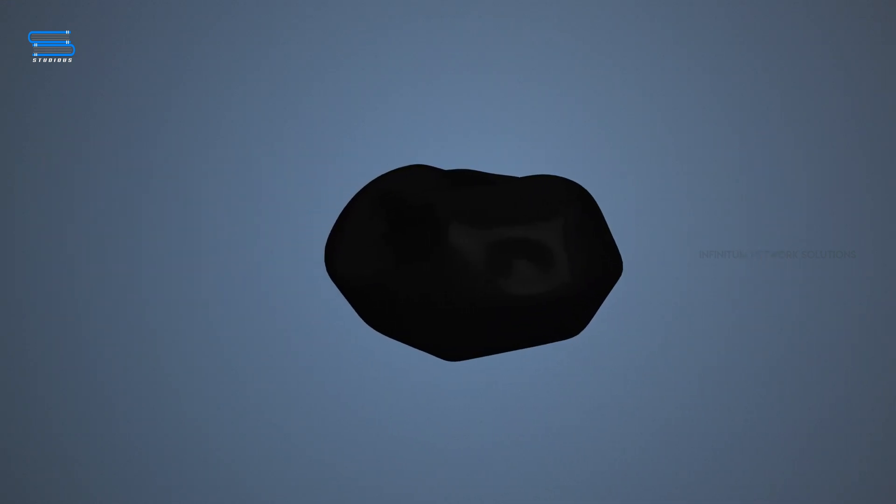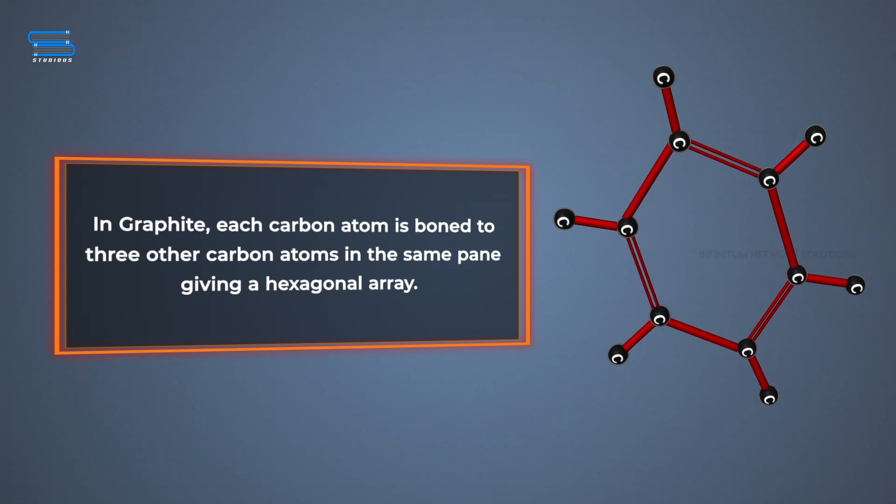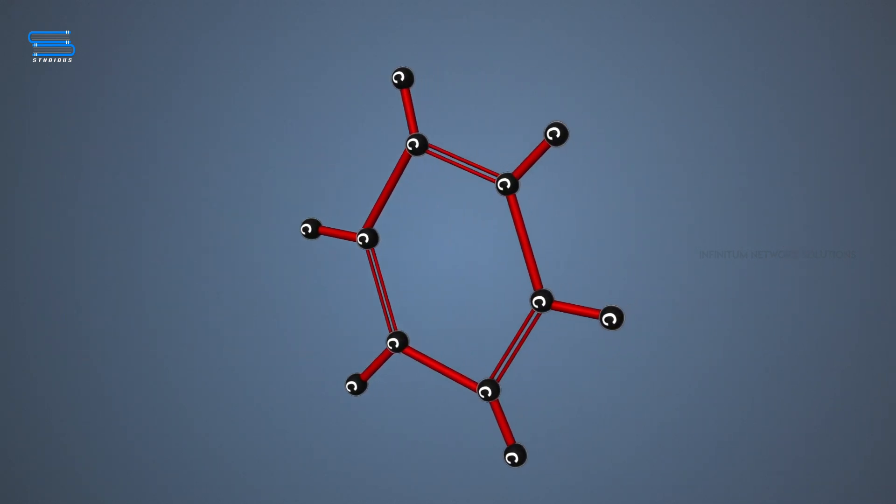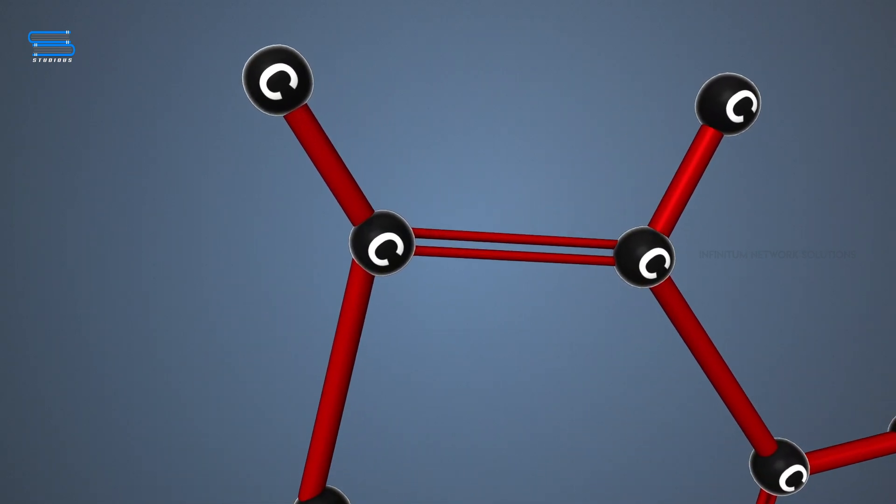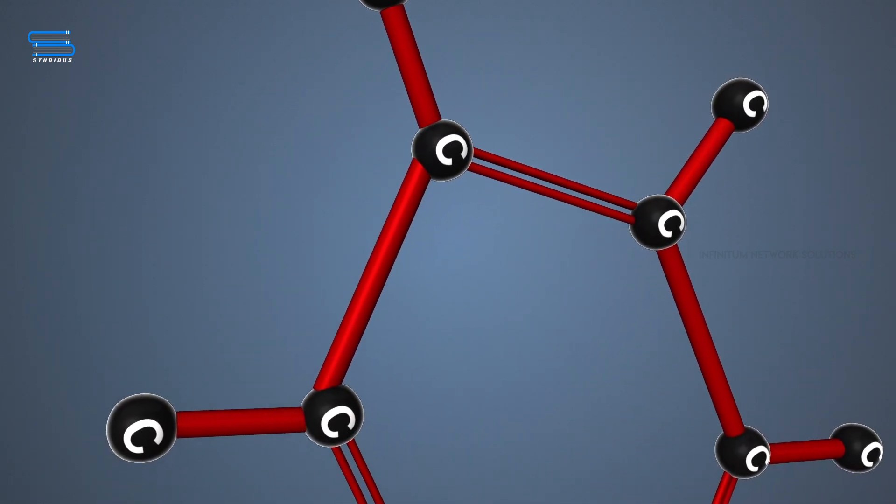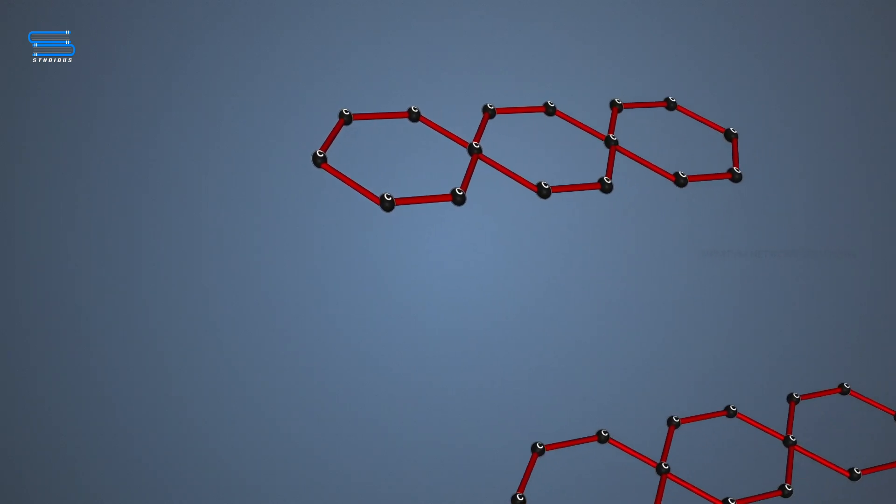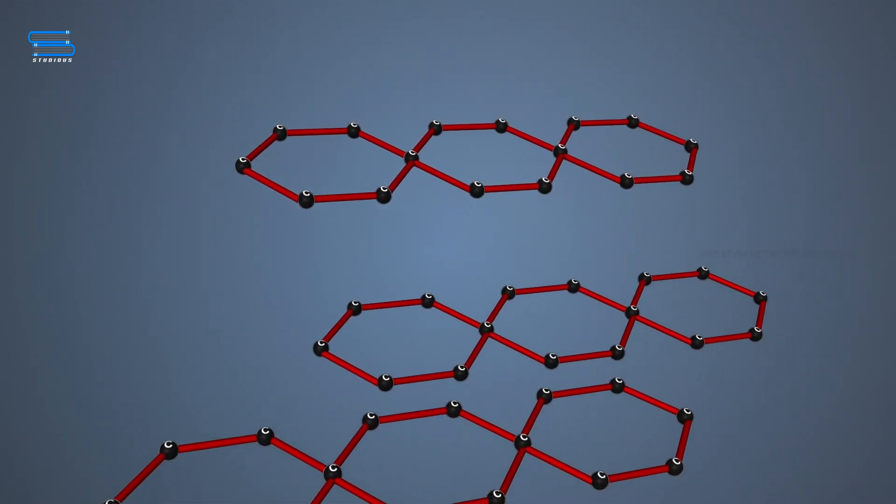In graphite, each carbon atom is bonded to three other carbon atoms in the same plane, giving hexagonal arrays. One of these bonds is a double bond, and thus the valency of carbon is satisfied. Graphite structure is formed by the hexagonal arrays being placed in layers one above the other.